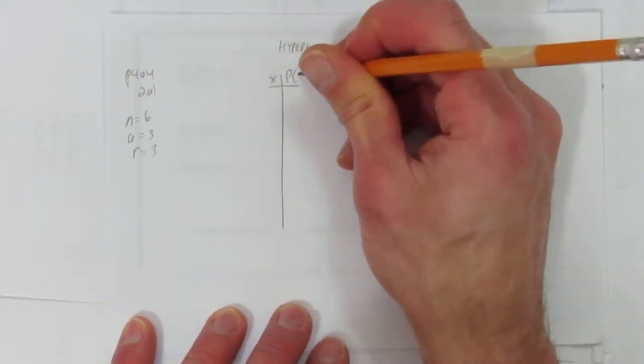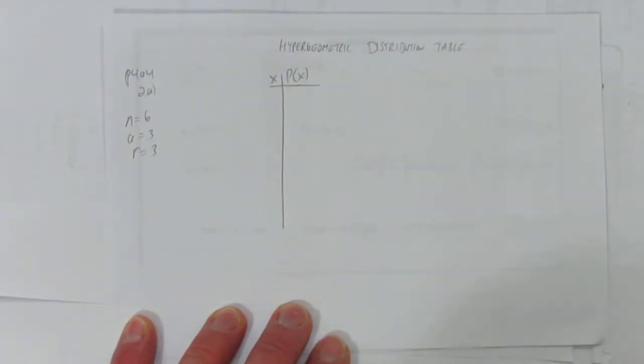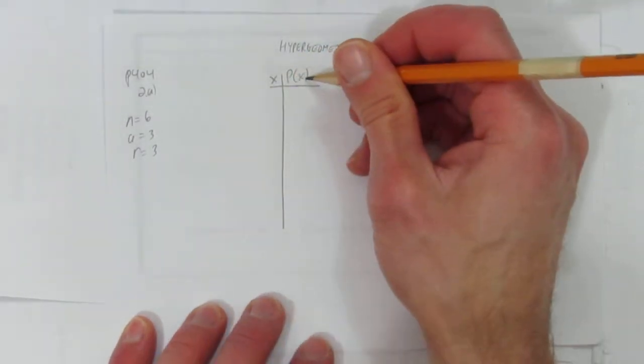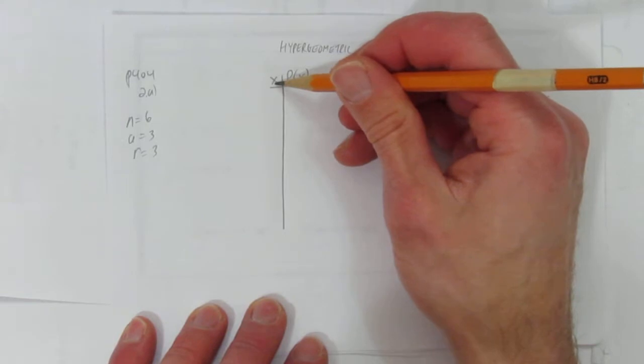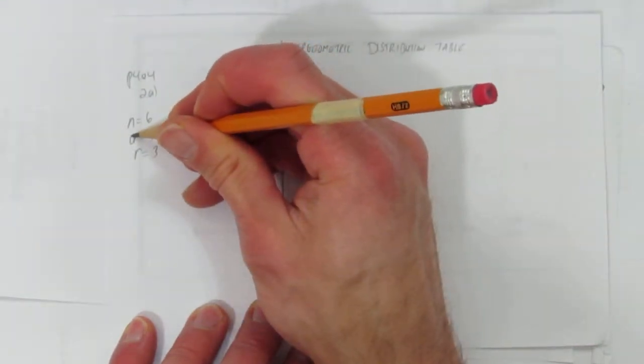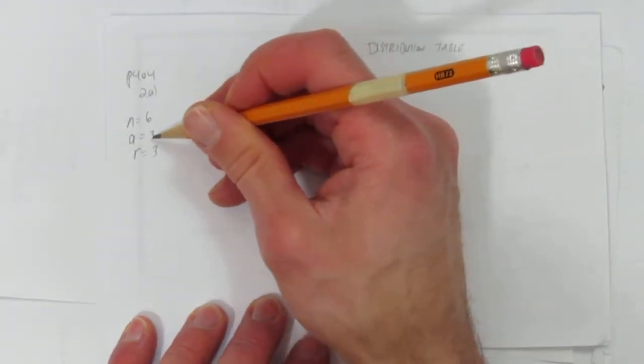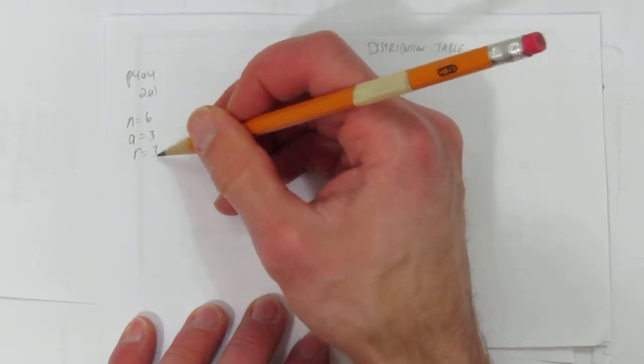x and p of x - that's always what a distribution table looks like. It has x and p of x. With hypergeometric distribution, the x is the number of successful things to choose what we want, which are the a's. And there are 3 a's, and there are 3 trials.